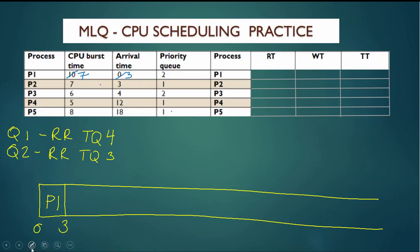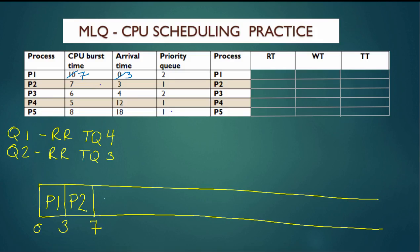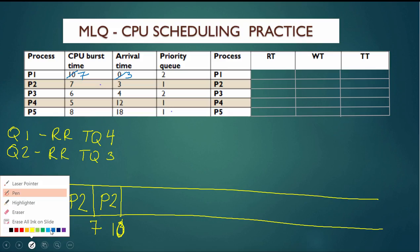Now at current time 3, we have P1 and P2 active in the system. All the rest have not arrived yet. P2 is a Q1 process, so it does round-robin with a time quantum of 4, and P2 will go until time 7. At time 7, P3 has arrived, but P3 is also a Q2 process, so P2 is going to continue and do the other three time units, finishing at time 10. P2 has completed its execution at time 10.